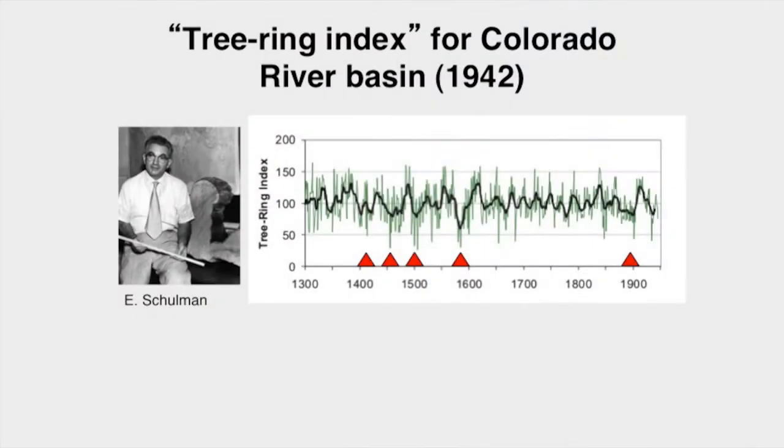By the early 1940s, Douglas' colleague, Edmund Shulman, found that these tree rings also corresponded closely to annual stream flow in the region. He developed a tree ring index for the Colorado River Basin that suggested past dry periods have been worse than those since 1900.